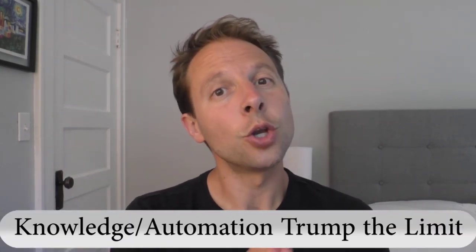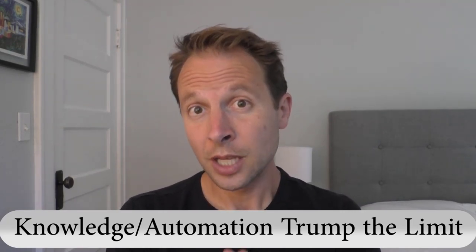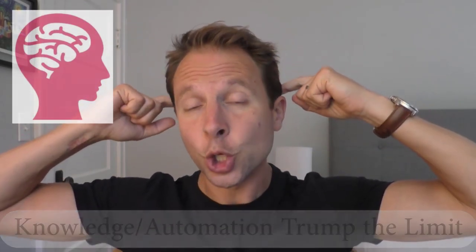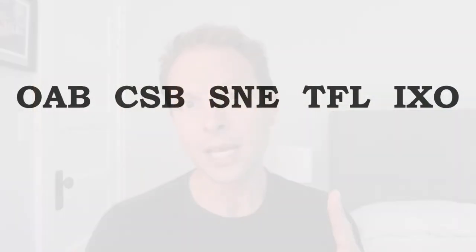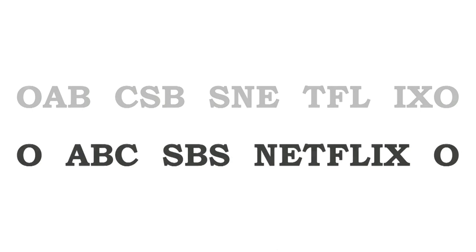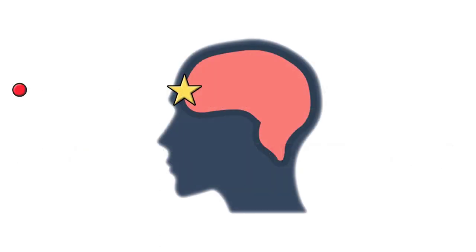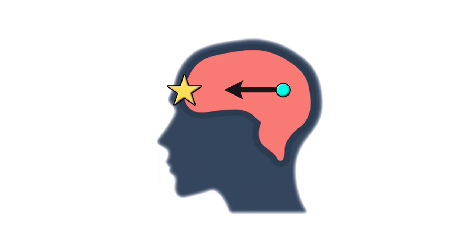So if there's a limit, how do we get any thinking done? The second principle of memory is this: knowledge and automation trump that limit. Anytime we have information locked down and organized in our long-term memory, we can use that to bolster this limit. Watch what happens if I simply rearrange the spacing of those letters — now you're doing fine. We've gone from input mode to output mode, using our long-term memory to support our thinking, leaving plenty of space for other stuff.